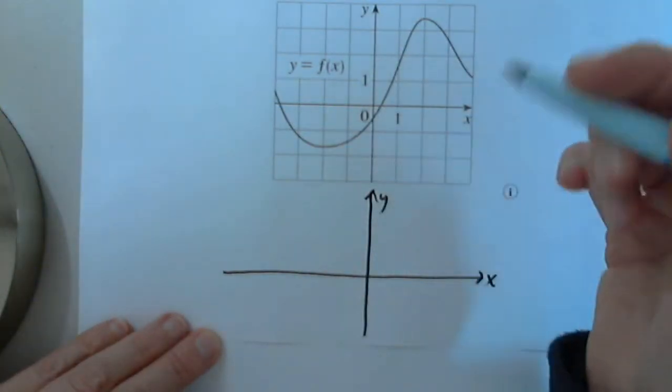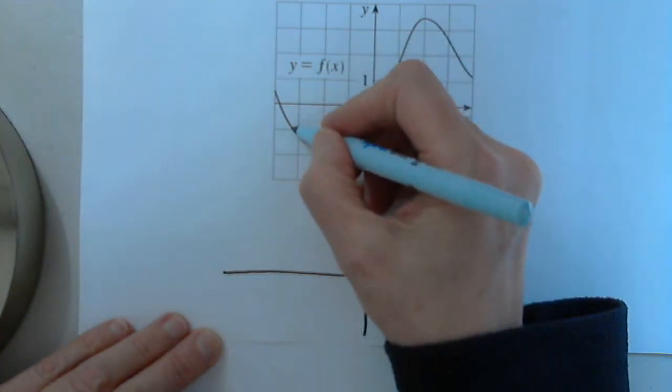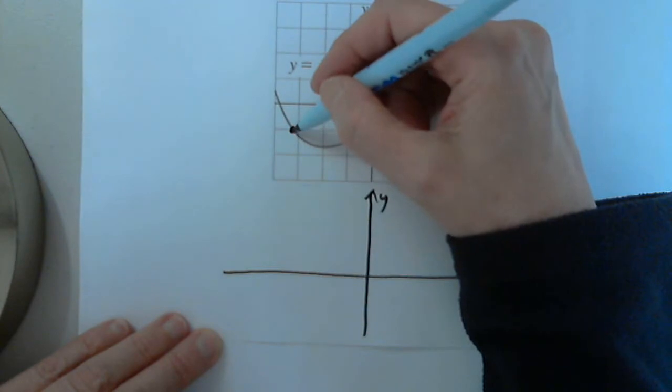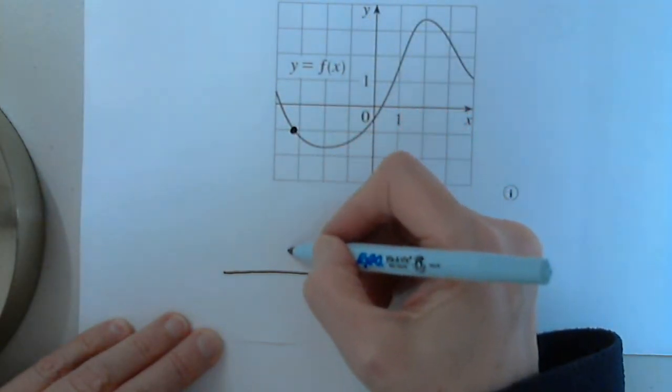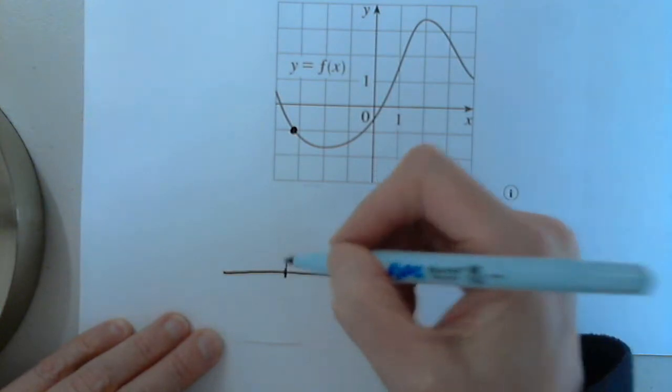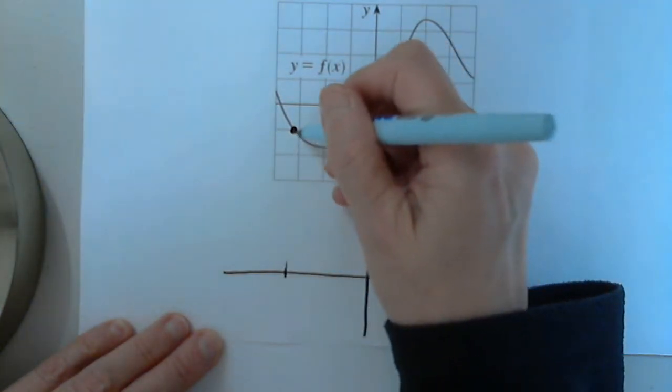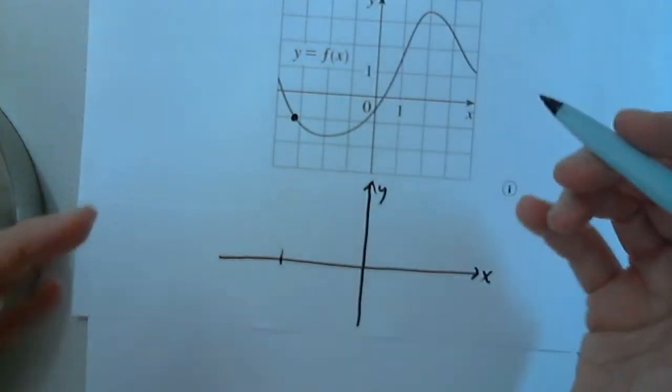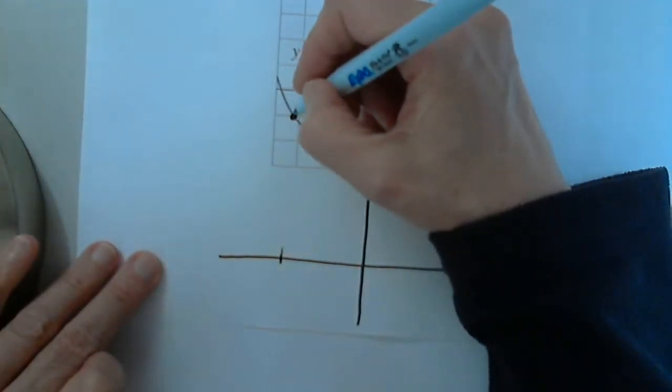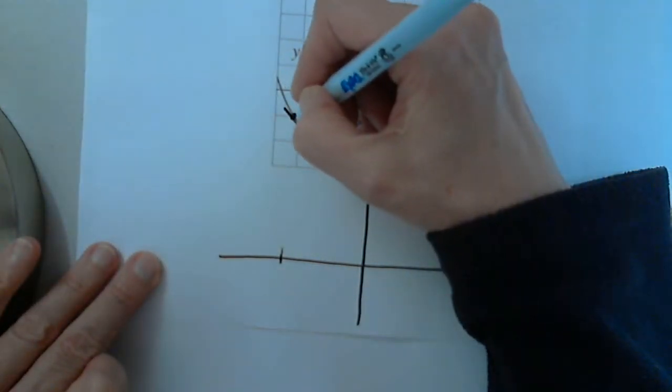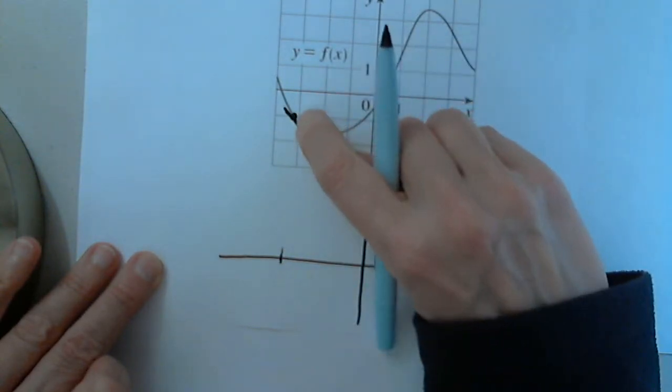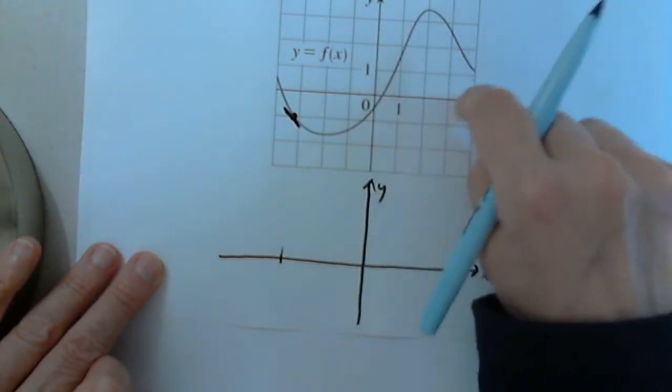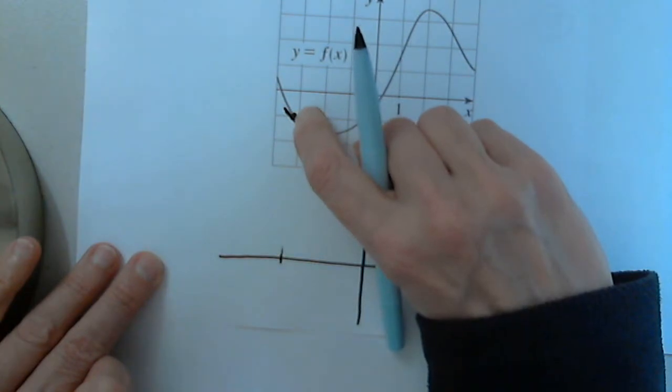So let's pick some points. For example, let's say right here I would like to determine the derivative function, the derivative, the value of the derivative function at this point. So what am I trying to find? I'm trying to find the slope of this line. The slope of this line will give us the rate of change of this function with respect to x at this time, at this point.